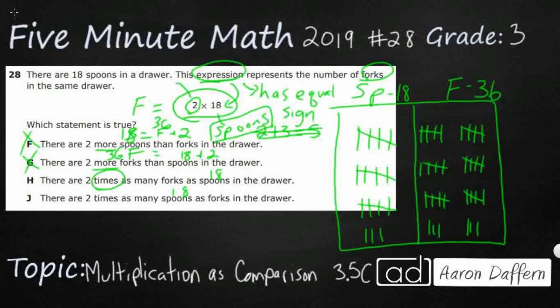There we go. Now times, look at that. That's what we're needing because that's our multiplication right there. But now we've got to figure out which way it is. Two times as many forks as spoons. So forks equals spoons times 2. Or we've got spoons equals forks times 2. That's what H and J say.